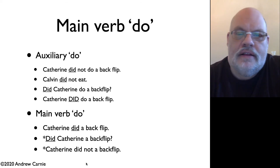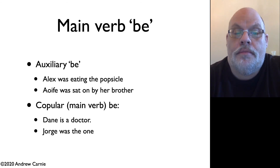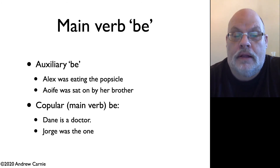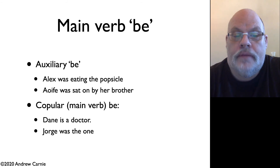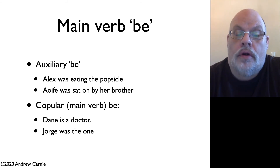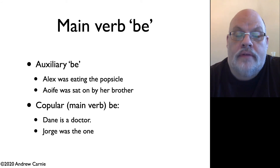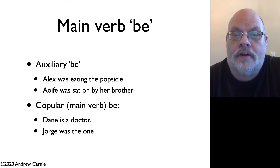The situation is slightly different with the verb to be. There is a usage of main verb be which we call a copula — copula means it equates two things together. So 'Dane is a doctor,' 'Jorge was the one,' or 'Jorge was tall' — all of those are cases of copular be.